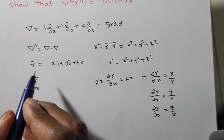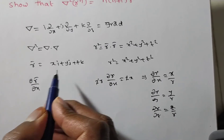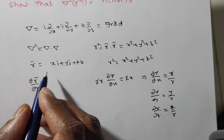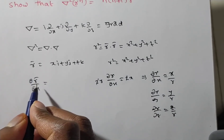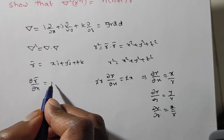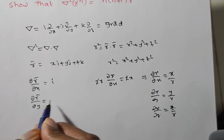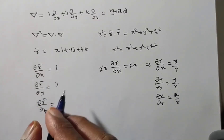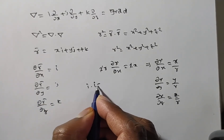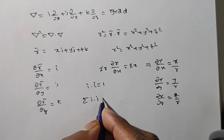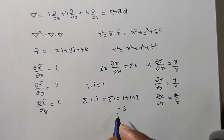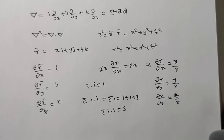Since r̄ is a vector function of x, y, z, differentiating r̄ partially: ∂r̄/∂x = i, ∂r̄/∂y = j, ∂r̄/∂z = k. Also, i·i = 1, so summation of i·i = summation of 1 = 1+1+1 = 3. These are basic formulas to remember.